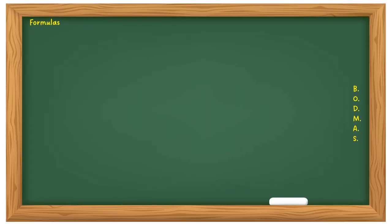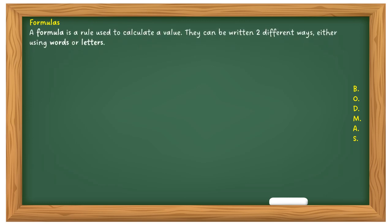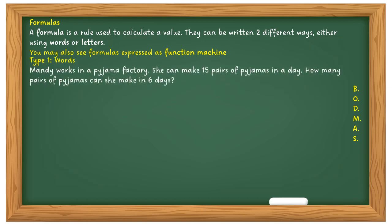Now let's look at formulas. A formula is a rule used to calculate a value — it can be written using words or letters, and you may also see formulas expressed as a function machine. For the first example: Mandy works in a pajama factory and makes 15 pairs per day. How many pairs can she make in 6 days? Your formula is simply pajamas times number of days — 15 times 6 is 90 pajamas. You don't need to write the word formula in your exam, just show the numbers.